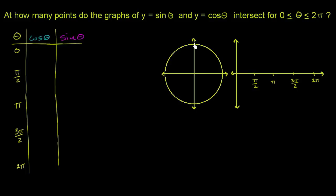To do this, I've set up a little chart for theta, cosine theta, and sine theta. We can use this and the unit circle to quickly graph y equals sine theta and y equals cosine theta, and then think about how many times they intersect and where they actually intersect.